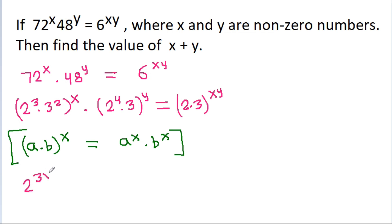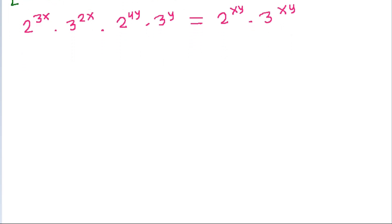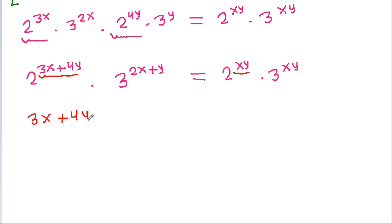This will be equal to 2 power 3x into 3 power 2x into 2 power 4y into 3 power y, equal to 2 power 3x into 3 power 4y — wait, combining like bases: 2 power (3x plus 4y) into 3 power (2x plus y) is equal to 2 power xy into 3 power xy. So comparing powers of 2: 3x plus 4y is equal to xy. Suppose this is equation 1.